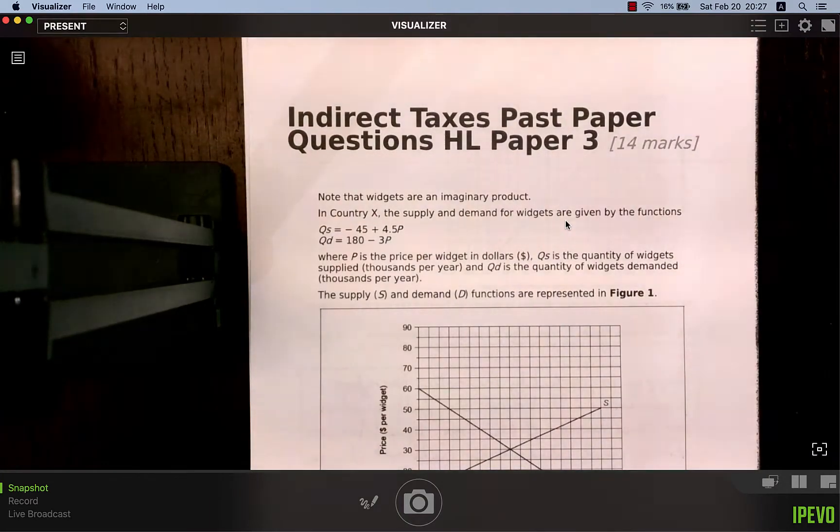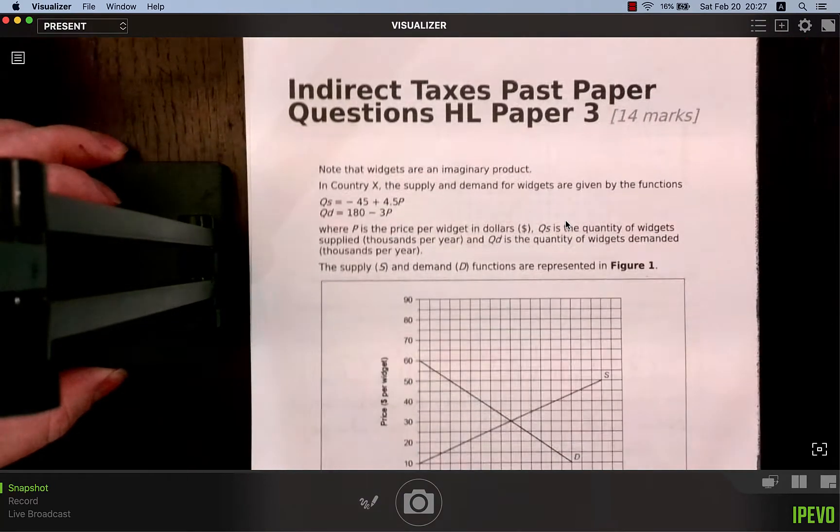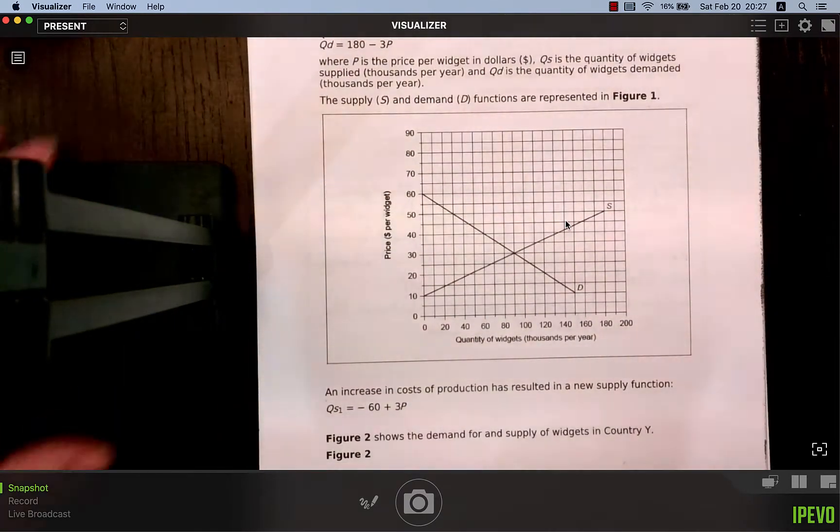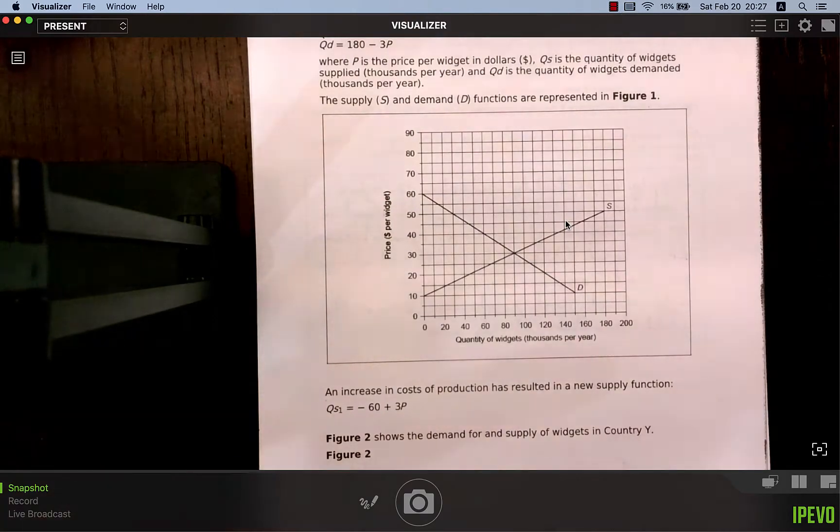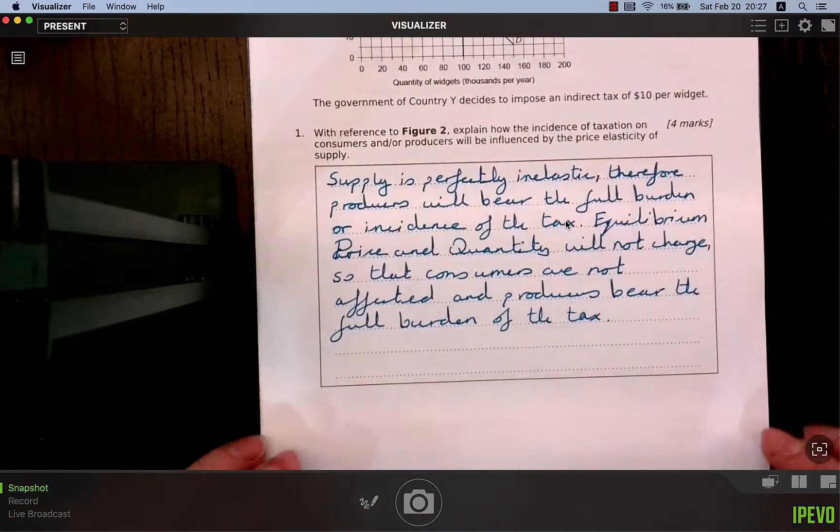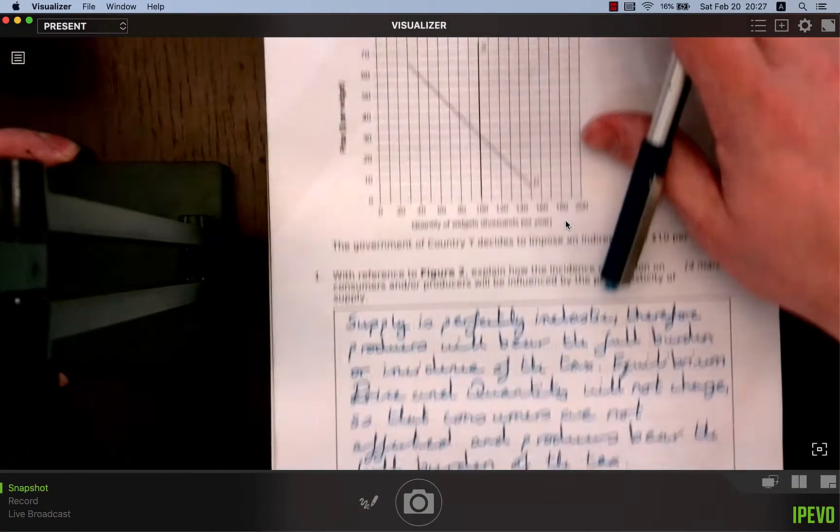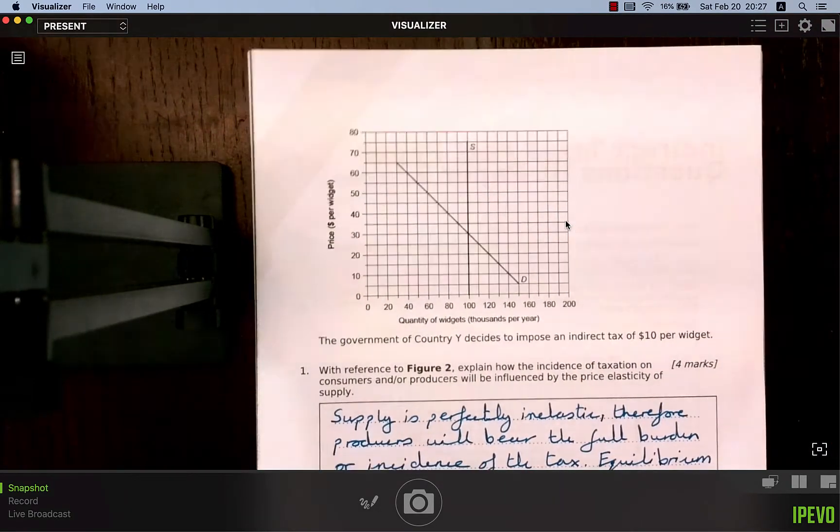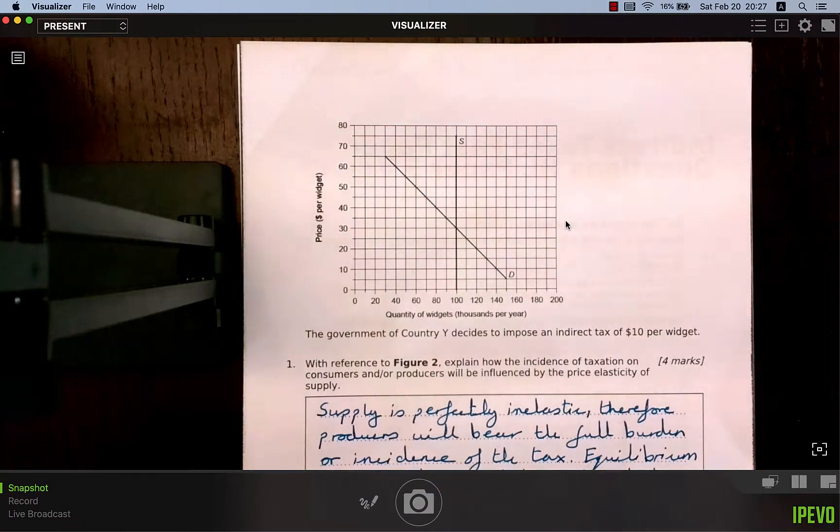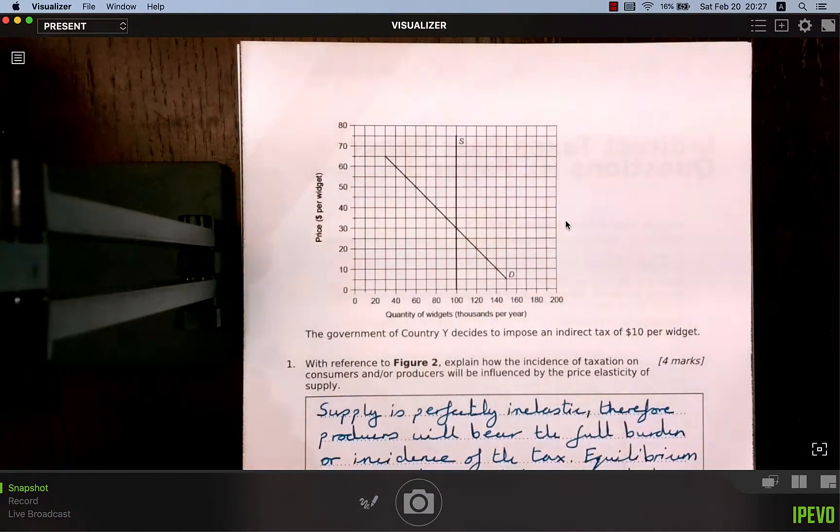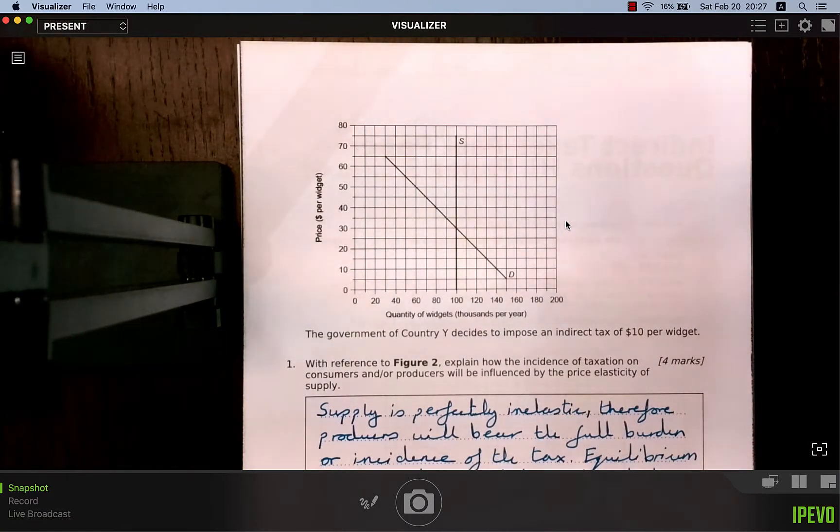Okay guys, in this video what I want to do is look at the previous IB questions concerning indirect taxes which would come up on paper 3 of what soon will be the old syllabus. Like a number of these question sets that I've put together, there's a lot of information that's not directly pertaining to us, so what I shall do is just move on very quickly.